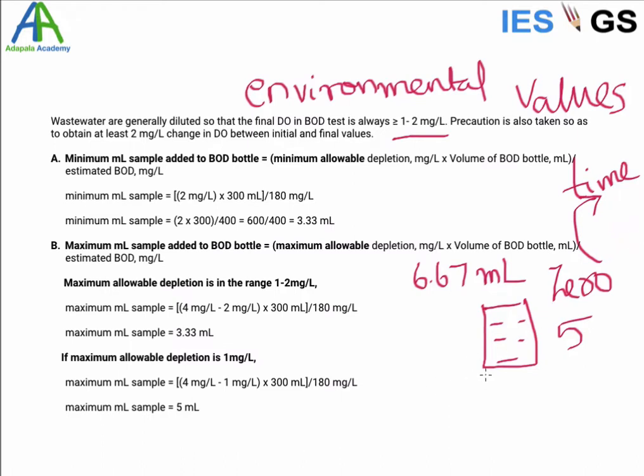For avoiding such difficulties, we will keep the sample such that there will be some oxygen remaining at the fifth day also. So this oxygen remaining can be in the range of 1 to 2 mg/L. If you are taking 2 mg/L, the oxygen available is only 4 minus 2, that is 2 mg/L, and it is 3.3 ml.